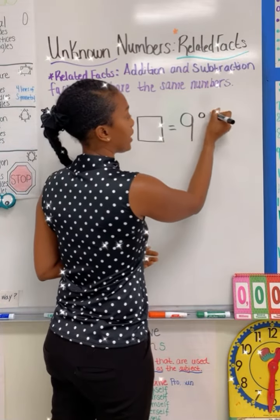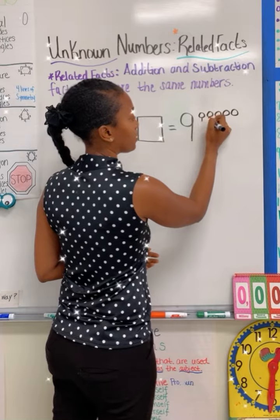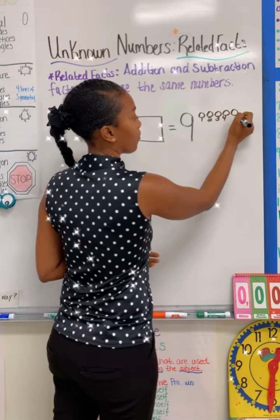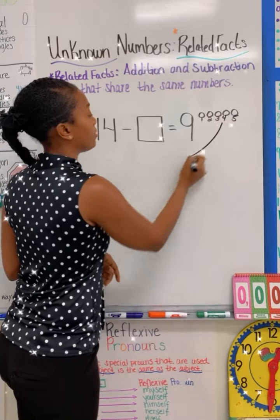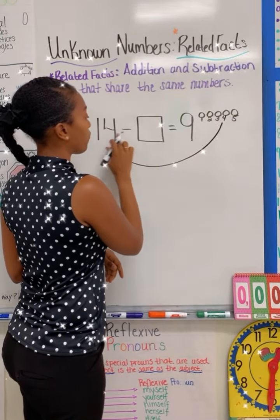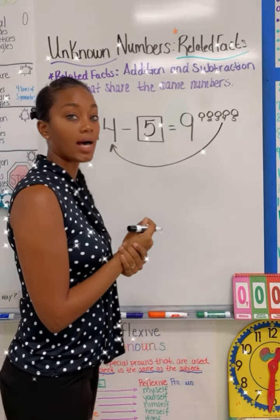Well, we have nine, 10, 11, 12, 13, 14. That's one, two, three, four, five counters that I use to count up to 14. So 14 minus five is going to be equal to nine.